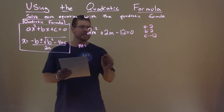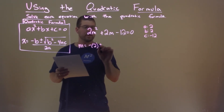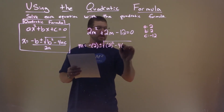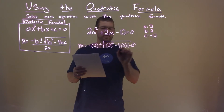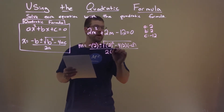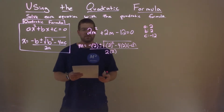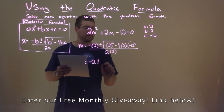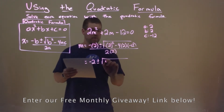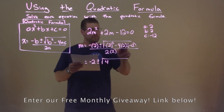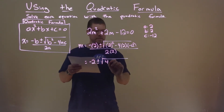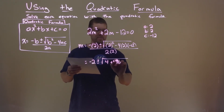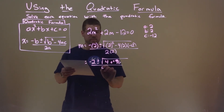Our variable m is equal to negative b plus or minus the square root of b squared minus 4 times a times c, all over 2 times a, which is 2. So we have negative 2 plus or minus the square root of 2 squared, which is 4, minus 4 times 2 times negative 12, which is negative 96. That's minus a negative, so it's plus a positive, all over 2 times 2, which is 4.